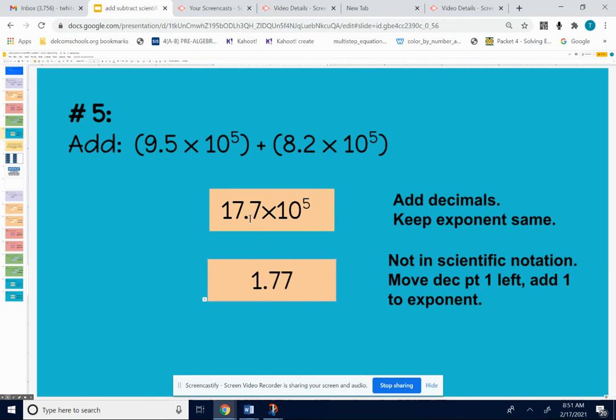And then if I move that decimal point 1 to the left, I've got to add 1 to my exponent of 5 to make it a 6. So my final answer, 1.77 times 10 to the sixth.